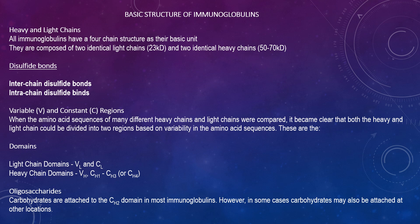Intra-chain disulfide bonds are also present. Looking at the variable and constant regions — the V and C regions — when amino acid sequences of many different heavy chains and light chains are compared, it becomes clear that both can be divided into two regions based on variability in the amino acid sequence. The light chain and heavy chain are composed of approximately 110 amino acids and 330–440 amino acids, respectively. We have the hinge region in which the arms of the antibody molecule form a Y, providing some flexibility in the molecule. Domains are folded into globular regions, each containing an intra-chain disulfide bond.